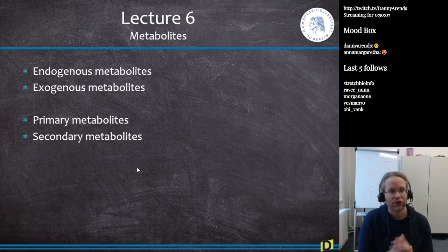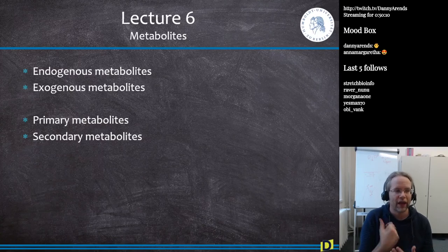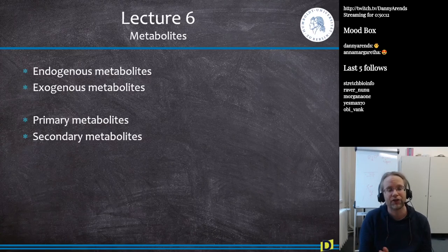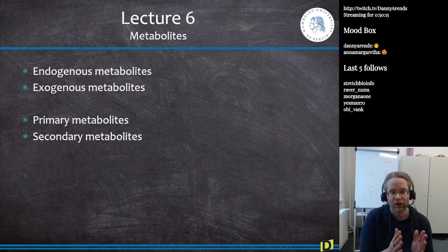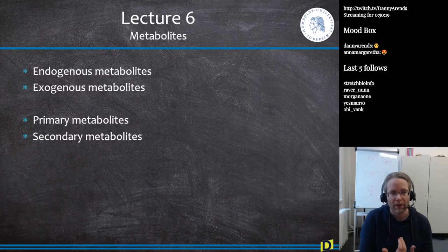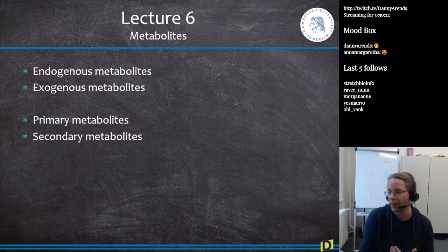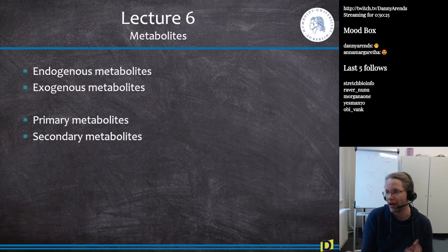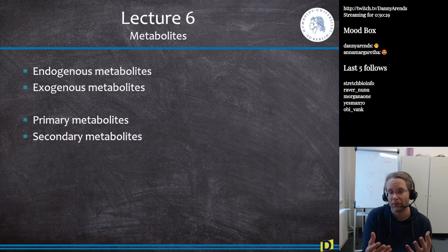Lecture 6 was about metabolites. Know the difference between endogenous and exogenous metabolites, and between primary metabolites — without which you die instantly — and secondary metabolites, which you can go without.